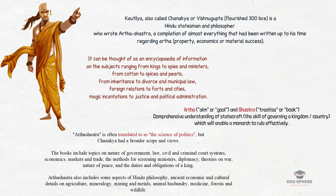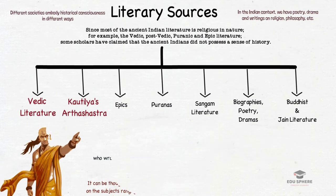Chanakya had a broader scope and views. The book includes topics on the nature of government, law, civil and criminal code systems, economics, methods for screening ministers, diplomacy, theories on war and the duties and obligations of a king. The Arthasastra also includes aspects of Hindu philosophy, ancient economic and cultural details on agriculture, mineralogy, mining and metals, animal husbandry, medicine, forests and wildlife. Though written between the 2nd century BC and 3rd century CE, its rules are still prominent even today and can be undoubtedly applied in today's systems.